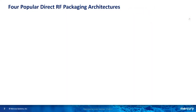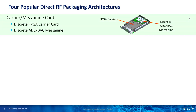Direct RF components and devices are created in a lot of different form factors using different techniques. The first is a mezzanine card, where you have the FPGA on the main carrier card — in this case a 3U VPX SOSA-aligned card — with a place for a mezzanine or daughter card to plug in. That makes a perfectly good direct RF solution.